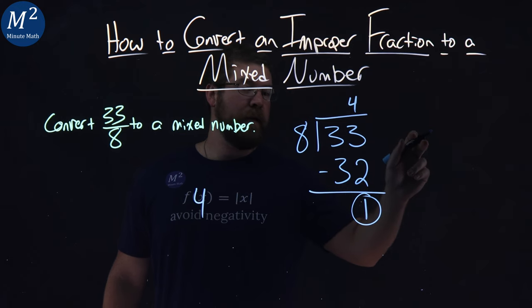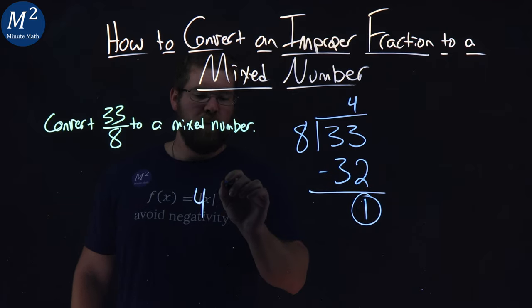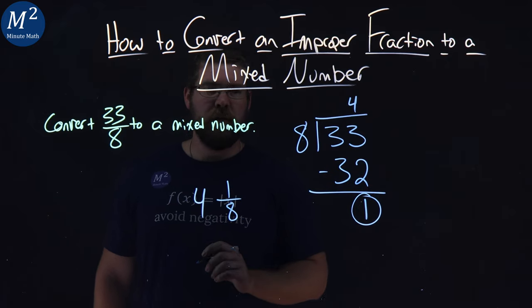If we did long division, kept on going, then getting decimals, 8 would go into 1, and we keep going from there. So, 1 over 8, right there, is our fraction.